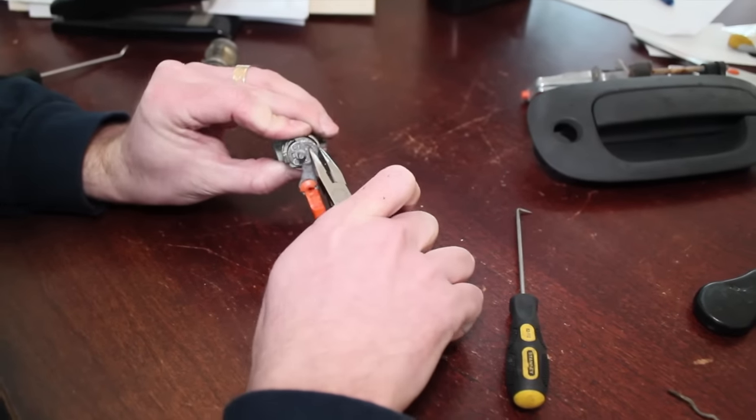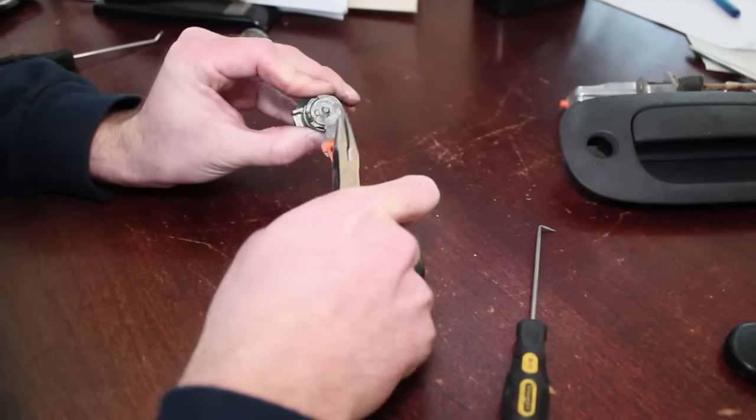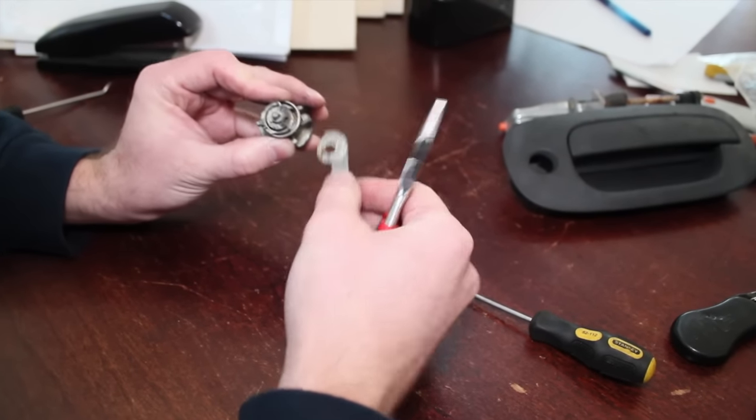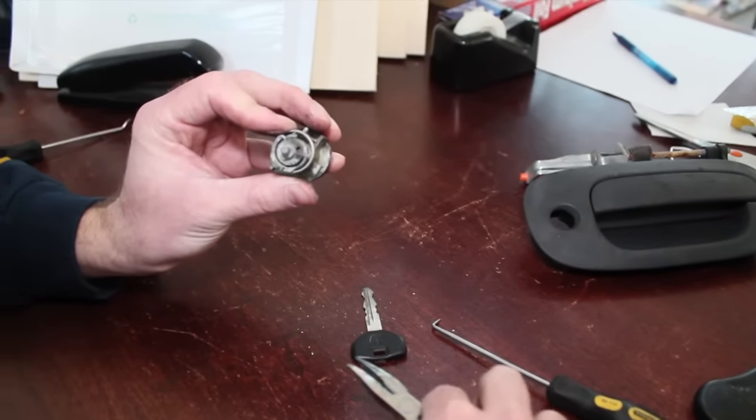You can see right there, took it off, and then that arm will come off of there. So it's going to expose the back of the cylinder lock there.